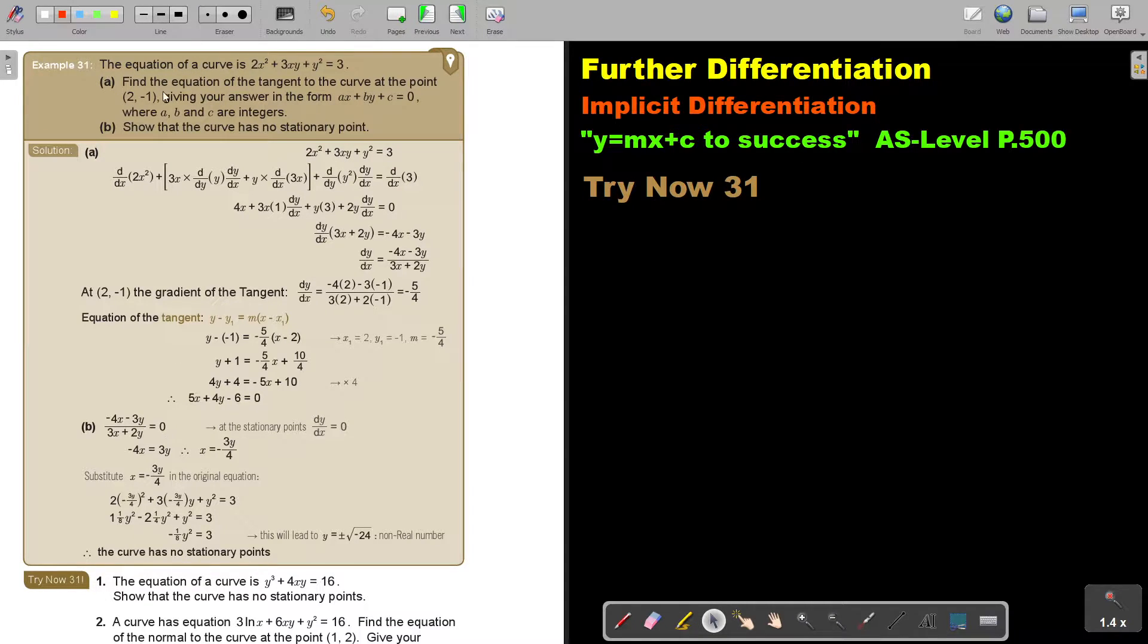Let's look at another example. The equation of a curve is 2x squared plus 3xy plus y squared equals 3. Find the equation of the tangent to the curve at the point (2, negative 1), giving your answer in this form, where a, b, and c are integers.